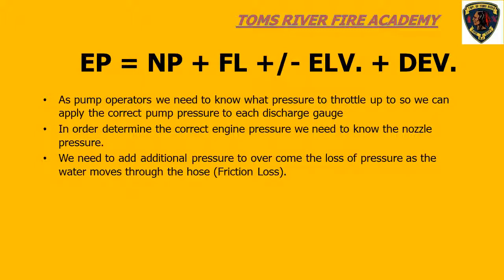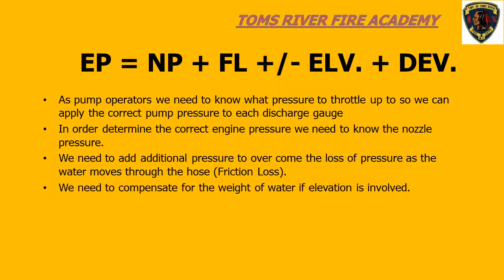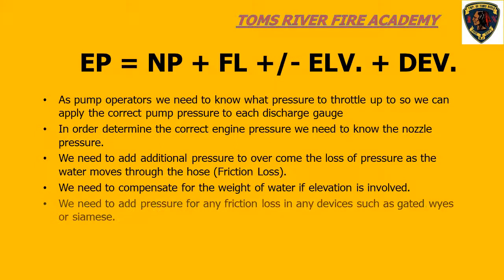If we look at the engine pressure formula, we need to add the nozzle pressure and friction loss together. We also need to compensate for any elevation if we are pumping to upper floors or downhill. Lastly, we need to compensate for friction loss in any device, such as a gated Y or a Siamese. As a rule of thumb, we add an additional 10 PSI for each of these devices.